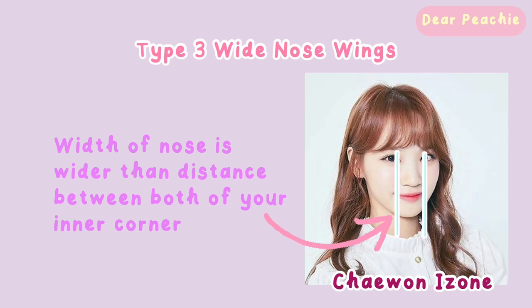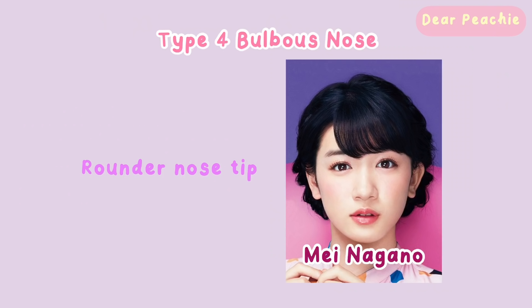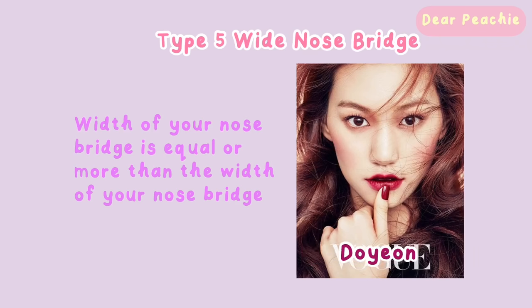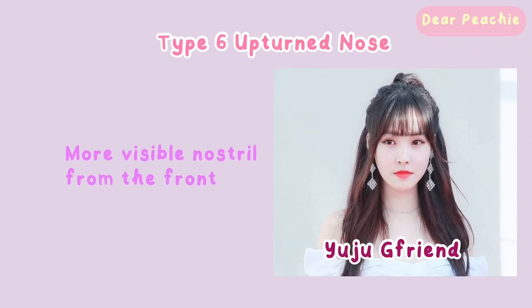Type three — wide nose wings: if the width of your nose is wider than the distance between both inner corners, you might have wide nose alar. Type four — bulbous nose: a bulbous nose has a rounder nose tip. Type four — wide nose bridge: if the width of the nose bridge is equal to or more than the width of your nose wings, this is a wide nose bridge. Type five — upturned nose: an upturned nose has more visible nostrils from the front.